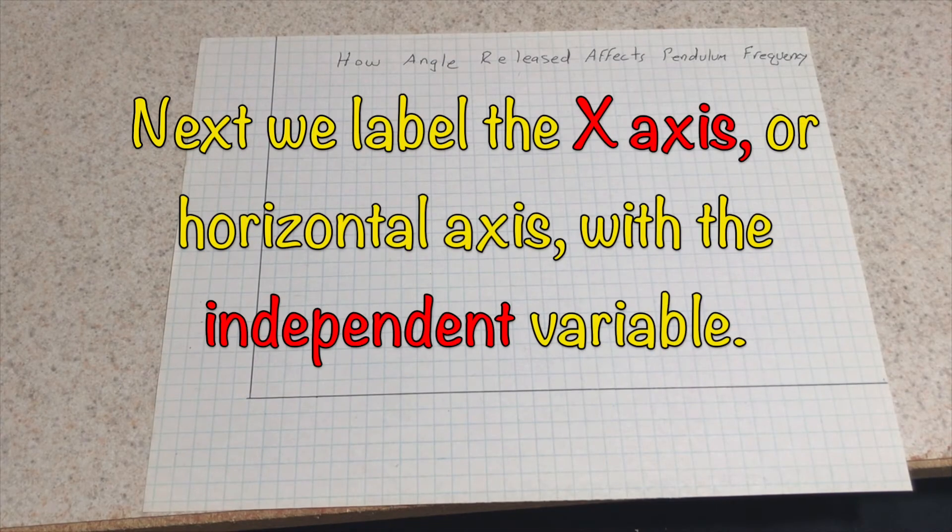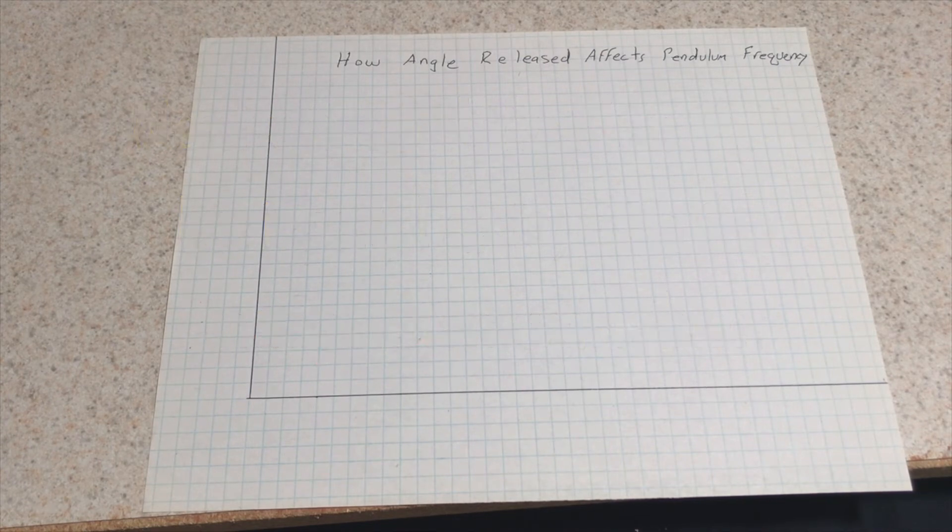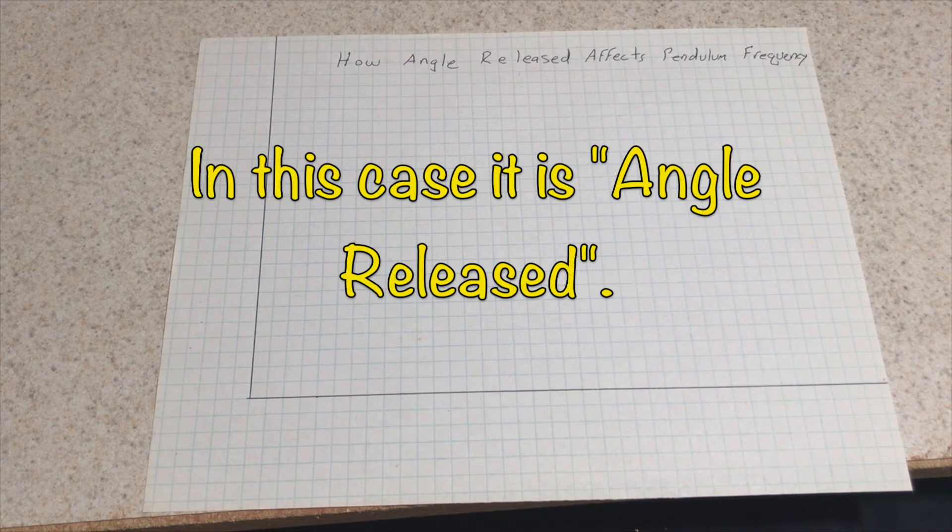Next, we label the x-axis or horizontal axis of the graph. In this case, the angle released.